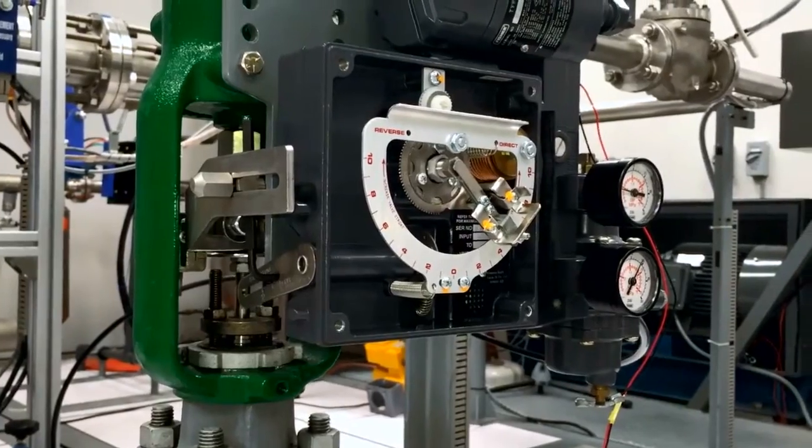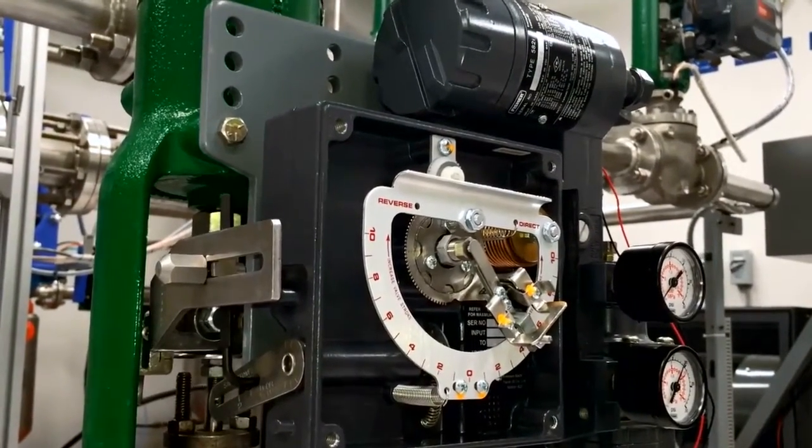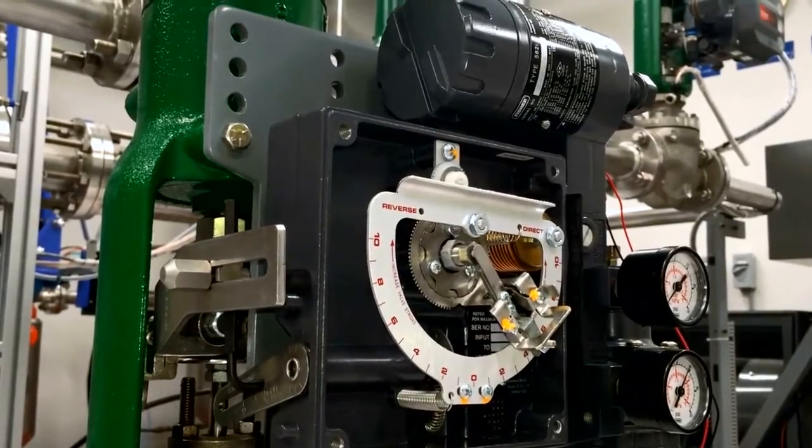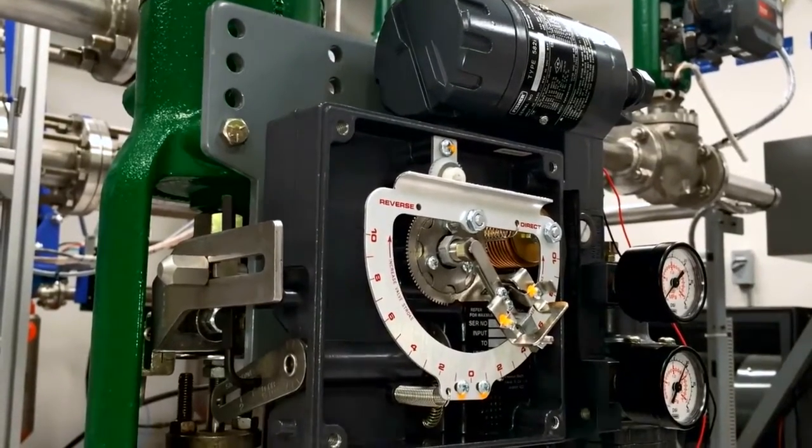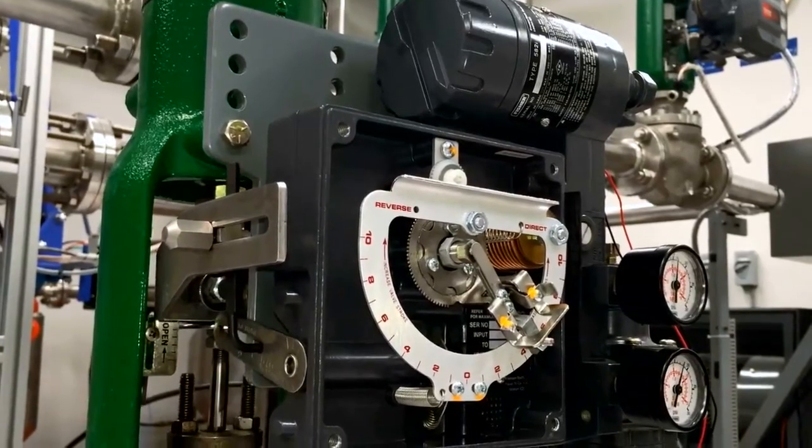After the zero trim adjustment, we apply an input signal equal to the high value of the input signal range, in this case 20 milliampere, and observe the actuator stem.